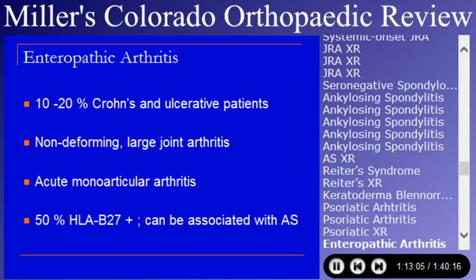Enteropathic arthritis occurs in 10-20% of people with Crohn's and ulcerative colitis. It tends to be non-deforming and not a surgical issue. It tends to involve large joints. Recognition is important because you may be asked to see people with painful swollen joints and find out they have Crohn's disease. It is 50% HLA-B27 positive.